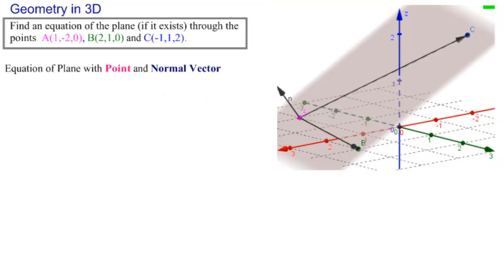So let's do that. We need a directional vector for AB. So that would be R_AB is equal to B minus A, equal to 2 minus 1, 1 minus minus 2, so plus 2, and 0 minus 0. So that leaves us 1, 3, and 0.